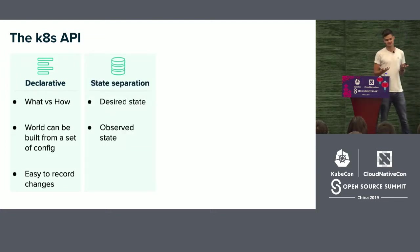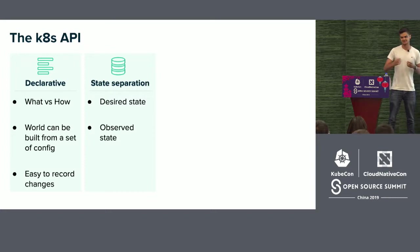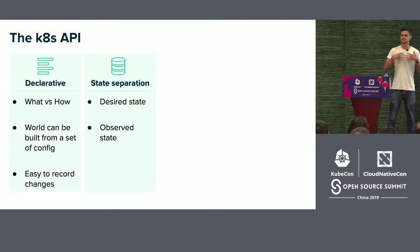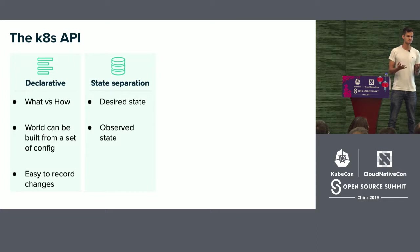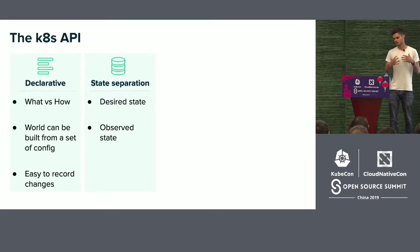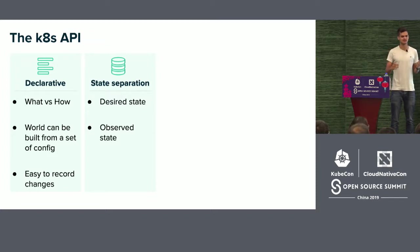Next, the Kubernetes API has a clear separation of states. There are two pieces: the desired state specified by a user or another system, and the observed state of the system. This clear separation is uniform across the Kubernetes API and allows for ease of reasoning about the system.